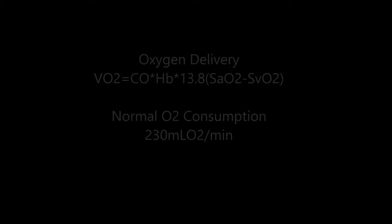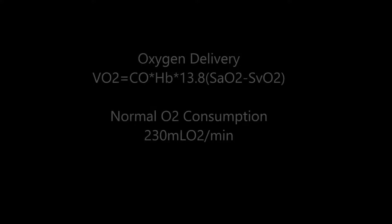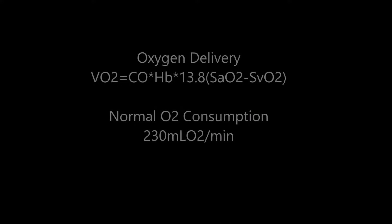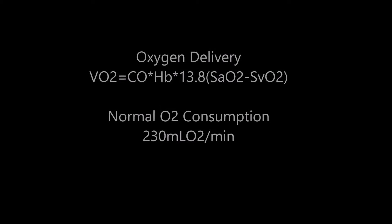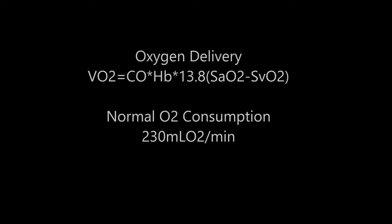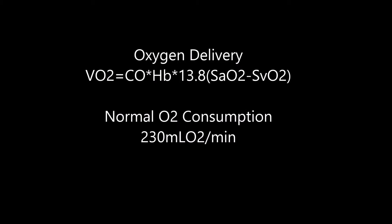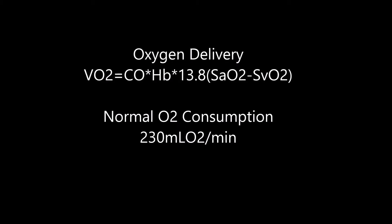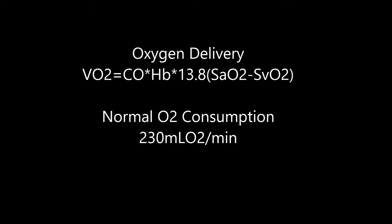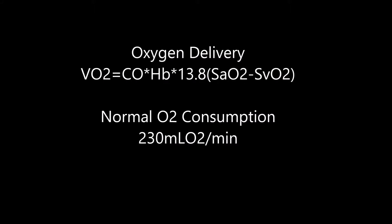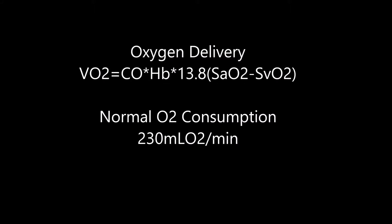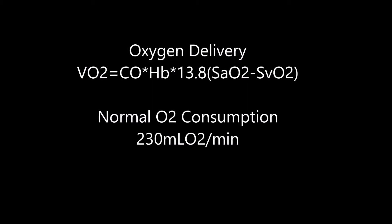So how do you balance oxygen delivery? Oxygen delivery is balanced by demand and consumption. Oxygen delivery is calculated by your cardiac output times your hemoglobin times 13.8 times your SaO2, minus your SVO2. Your content times your cardiac output determines your delivery when you compare the saturation at the artery to the venous.